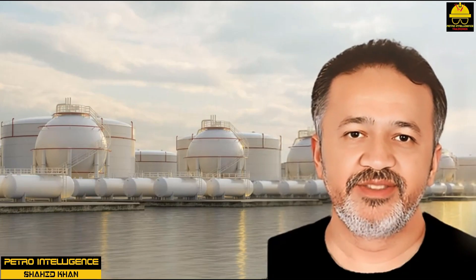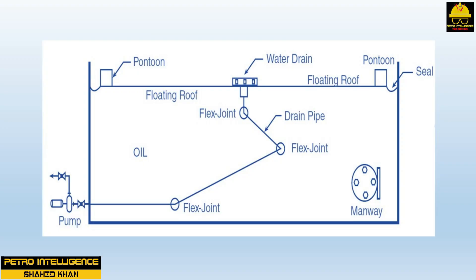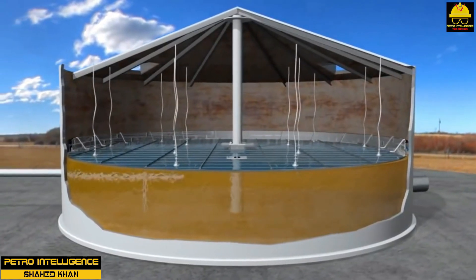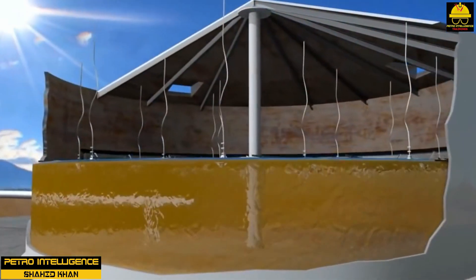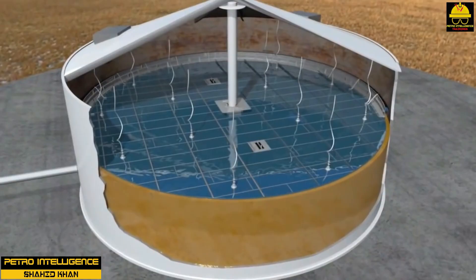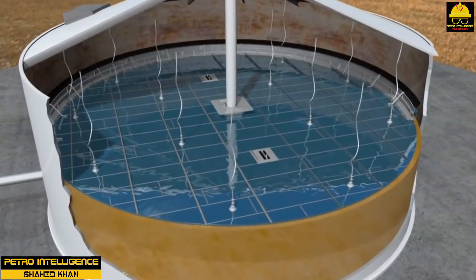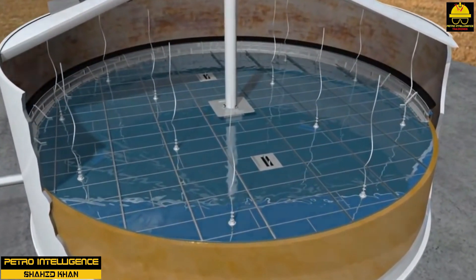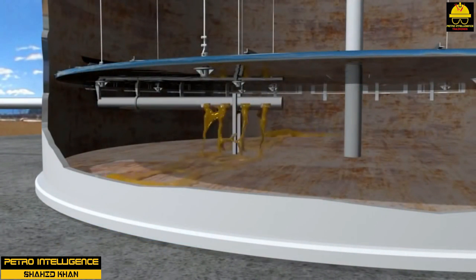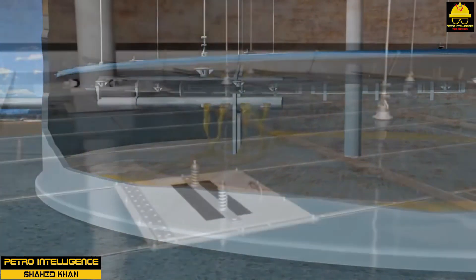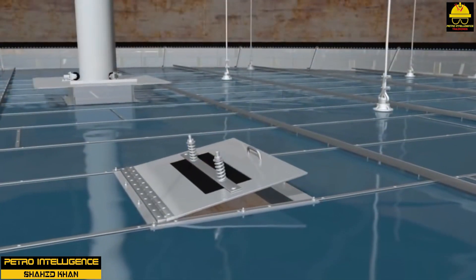A floating roof tank has an open top and a pan-like structure that floats on top of the liquid and moves up and down inside the tank with each change in liquid level. A close clearance is maintained between the roof and the shell of the tank. The opening is sealed by means of a flexible curtain-like fabric attached to the roof and to steel bearing surfaces called shoes. The shoes slide on the shell and are kept in contact by means of a suitable mechanism. There are three basic types of floating roofs: pan-type, pontoon-type, and double-deck.